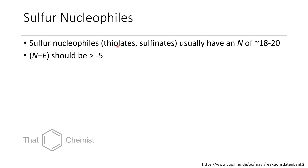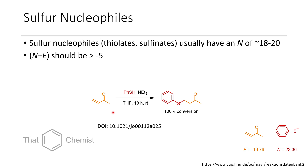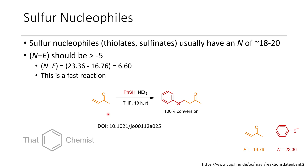Let's start with sulfur nucleophiles. A thiolate is just a deprotonated thiol or mercaptan; a sulfonate is an SO2R minus. These typically have an N between 18 and 20 — so these are good nucleophiles. Here's one example from the literature where we take thiophenol and add it to methyl vinyl ketone in the presence of triethylamine, and it was reported that this is obtained in 100% conversion. If we look at the E of methyl vinyl ketone — a value of minus 16.8 — and the N of our thiophenolate — approximately 23 — we have a net of 6.6, so this should be a reasonably fast reaction, done at room temperature in 18 hours in THF.